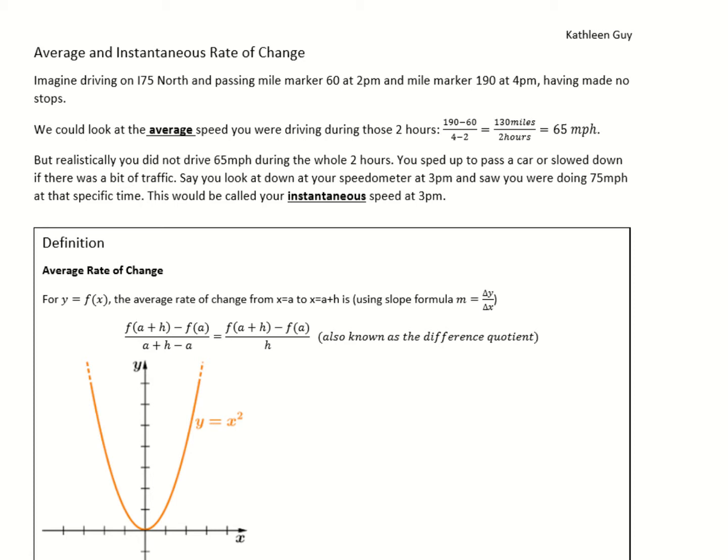But realistically you did not drive 65 miles per hour the whole two hours — you sped up to pass a car or slowed down if there was traffic. Say you look down at your speedometer at 3 p.m. and saw you were doing 75 miles per hour at that specific time. This would be called your instantaneous speed at 3 p.m., as opposed to your average speed over the whole two-hour span.